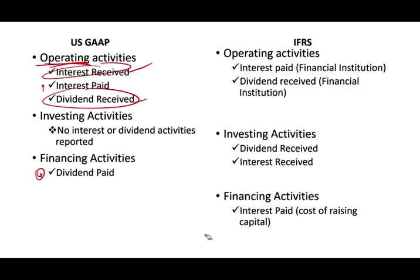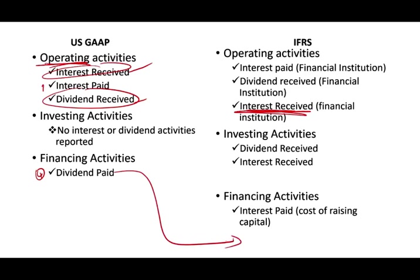Dividend Paid is a financing activity — that's the same under both GAAP and IFRS. So what differs are those three items: Interest Paid, Dividend Received, and Interest Received. We'll look at an example very shortly.